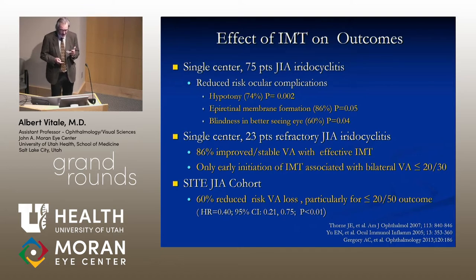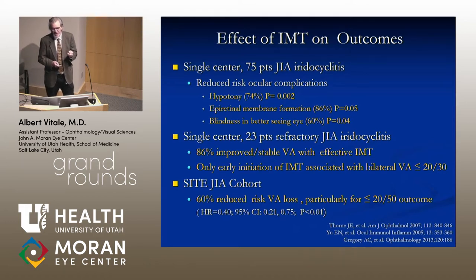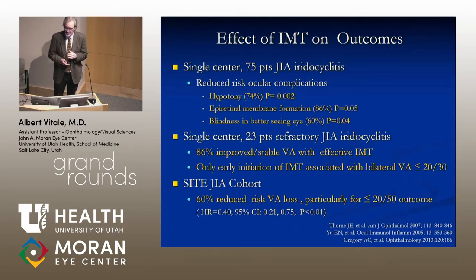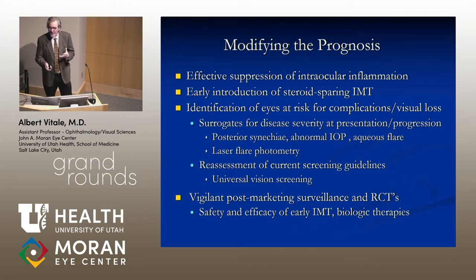Reduced complications include hypotony, epiretinal membrane formation, and blindness. An 86% improvement or stabilization of vision was seen with effective immunomodulation in one study, but this result was achieved only with early implementation of medication. In the SITE cohort — the largest retrospective cohort of five large uveitis practices in the United States — there was a 60% reduction in the risk of visual loss, particularly at the 20/50 level.